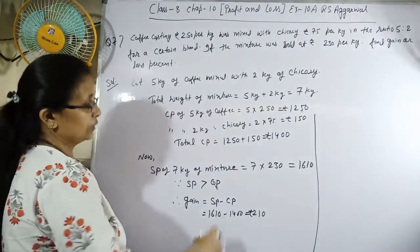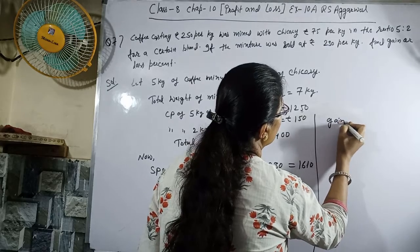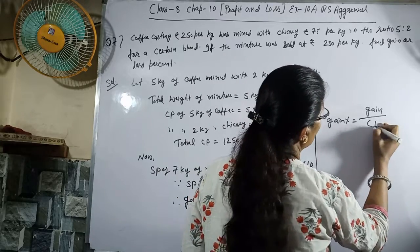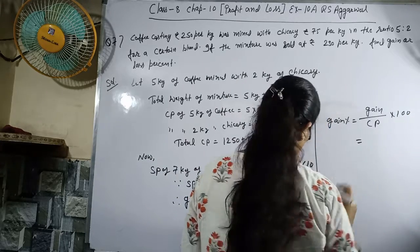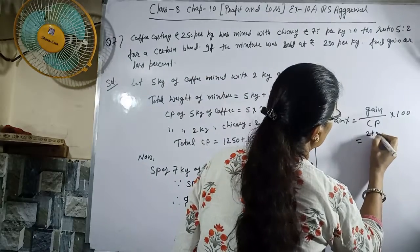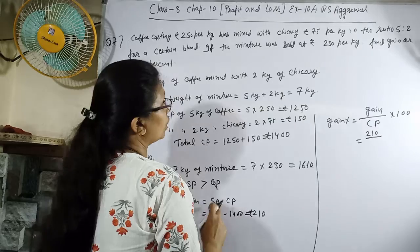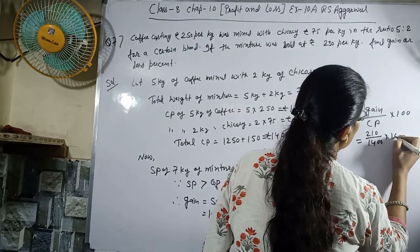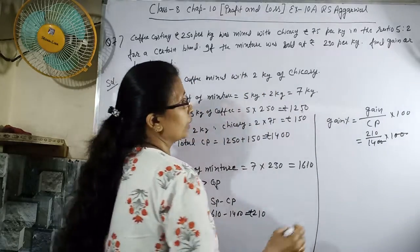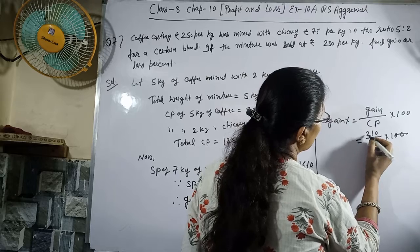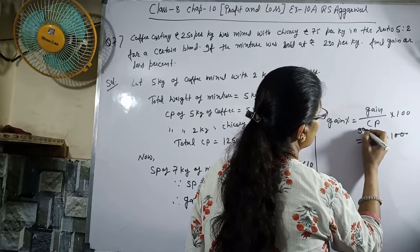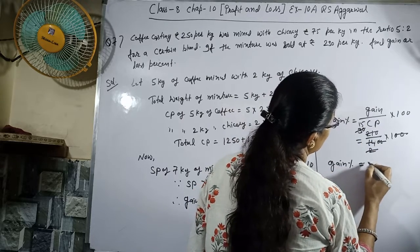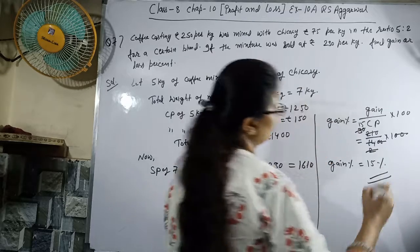Gain percent = (gain / CP) × 100 = (210 / 1400) × 100 = 15 percent.